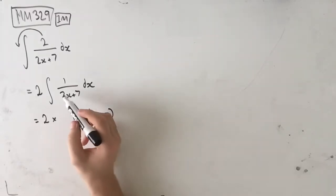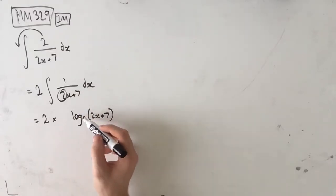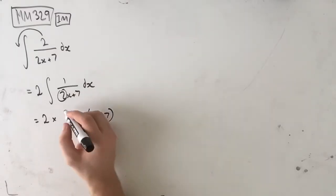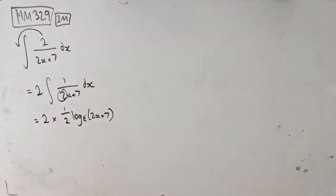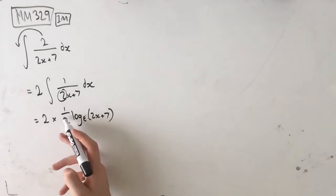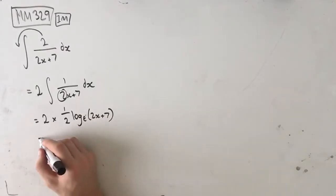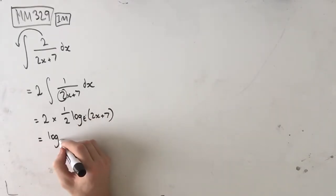But then what we also do is we take this coefficient of x and we multiply it by the reciprocal of that on the bottom. So what I mean by that is we take the coefficient of x and we put 1 over that. So we get 2 times 1 half log e of 2x plus 7, which is equal to log e of 2x plus 7.